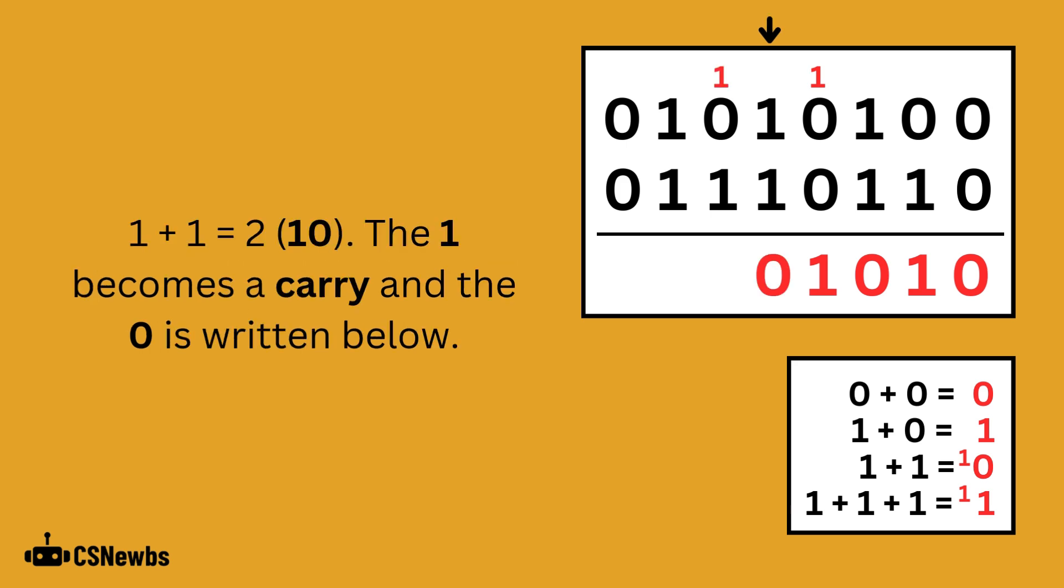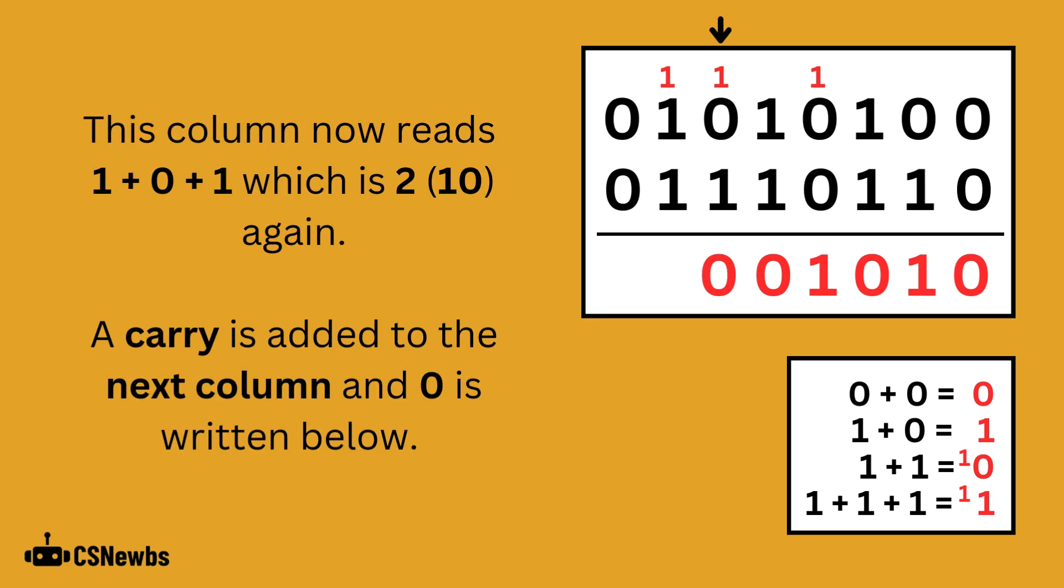1 plus 1 is 2. Remember that is 1, 0. So the 1 becomes a carry, and the 0 is written below. This column now reads as 1 plus 0 plus 1, which is 2, making 1, 0. The carry is added to the next column, and a 0 is written below.